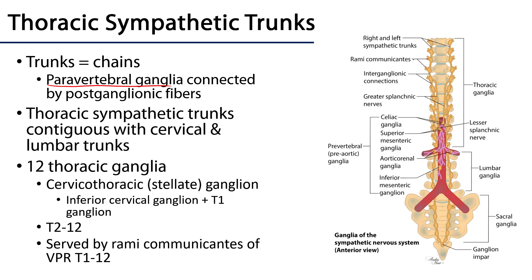The first thoracic ganglion tends to coalesce with the inferior cervical ganglion. Recall that the ganglia of the cervical region are condensed into inferior, middle, and superior ganglia. The inferior cervical ganglion and the first thoracic ganglion coalesce together as the cervicothoracic — also known as the stellate ganglion. After this, all successive ganglia are numbered as they maintain their relationships with ventral primary rami: T2, T3, and so on.